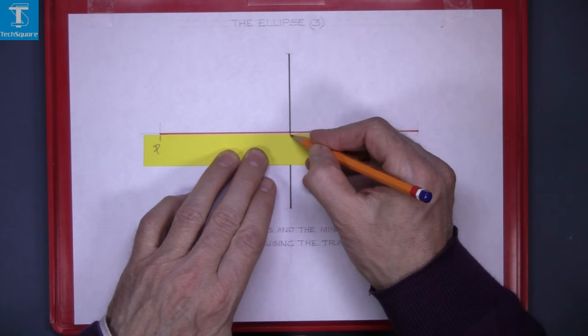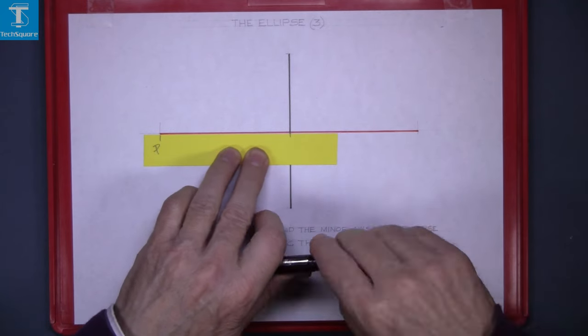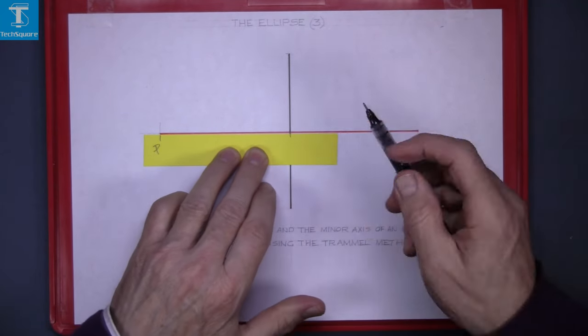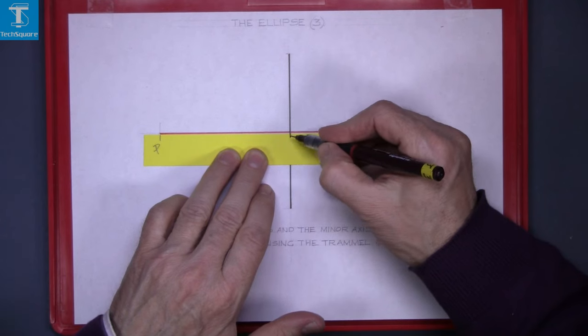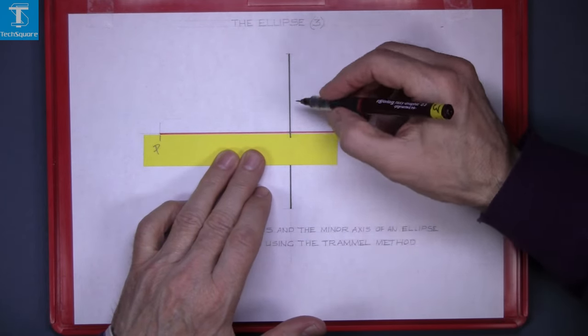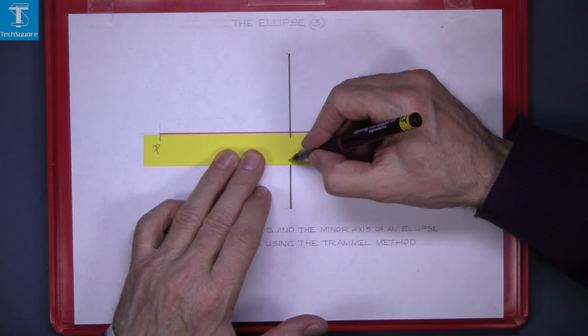Now mark the position of the minor axis here. The minor axis I've drawn in black, so I'm going to mark that point in black. I'm going to write down minor on the trammel.